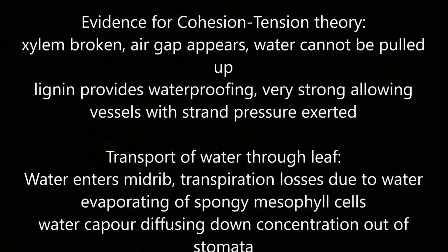Transport of water through the leaf: as water enters the mid-rib, transpiration losses occur as water evaporates out of spongy mesophyll cells. Water vapour then diffuses down the concentration gradient out of the stomata.